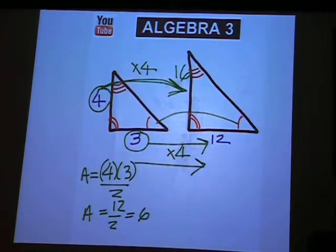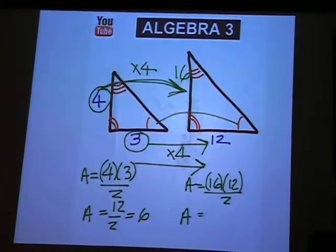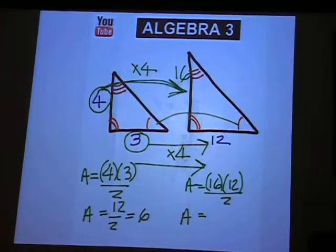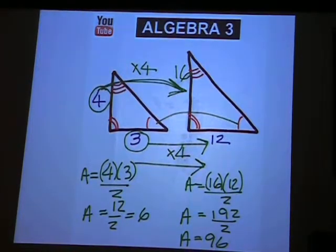And then on the other triangle, you have 16 times 12, and then divide by 2. 16 times 12 is going to turn out to be 192. And then if you divide by 2, you end up with 96 square inches.